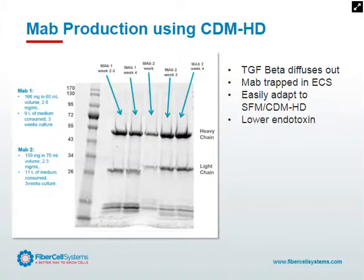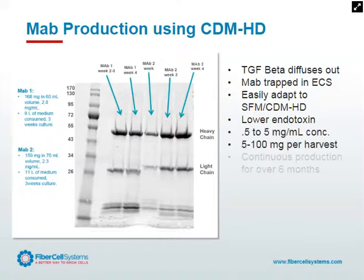Another advantage of hollow fiber is we can utilize an antibiotic-free culture system, resulting in very low endotoxin. The small volume of the harvest can facilitate lower endotoxin, because endotoxin tends to be volume-dependent and can co-purify with antibodies. The smaller volume you have to deal with, the lower endotoxin burden to clean up later. We've produced monoclonal antibody for over six months — in fact, the record is held by the Duke University Monoclonal Antibody Core Facility. They set up a cartridge in January of one year and closed it down so they could go on Christmas break that following December.